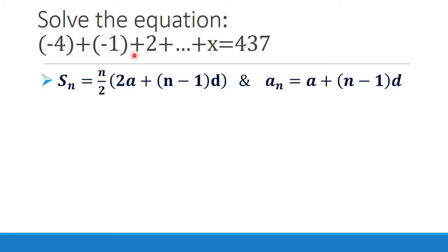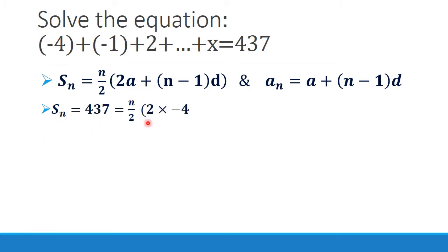First, we have to find how many terms are in this AP, that is, the value of n. Consider S_n equal to 437: n by 2 into 2 times minus 4 plus n minus 1 into d, where d is equal to 3.